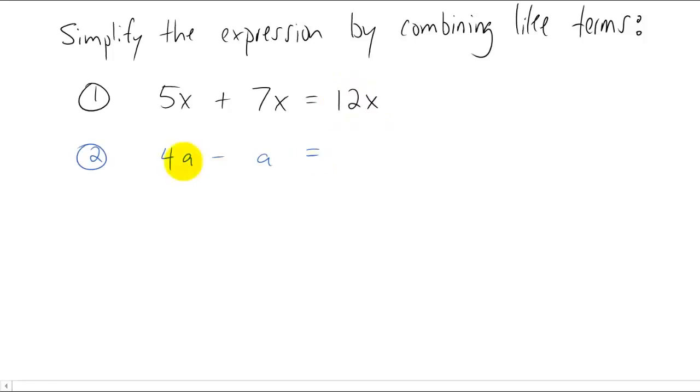As another example, how would you combine four a minus a? Well let's think of a as something like dollars. If you have four dollars and you subtract one dollar, remember there's a one coefficient in front of this, how many dollars do you have? Well I believe you have three dollars. So four a minus a is three a.